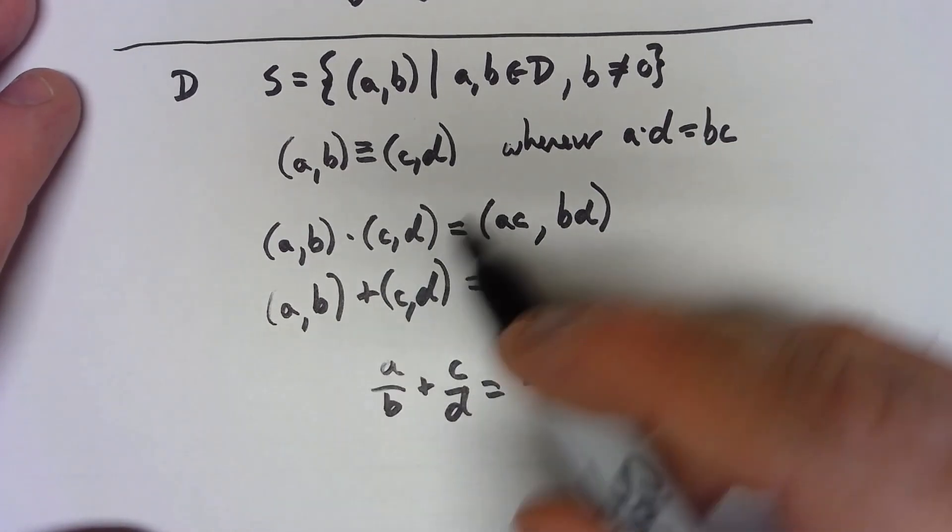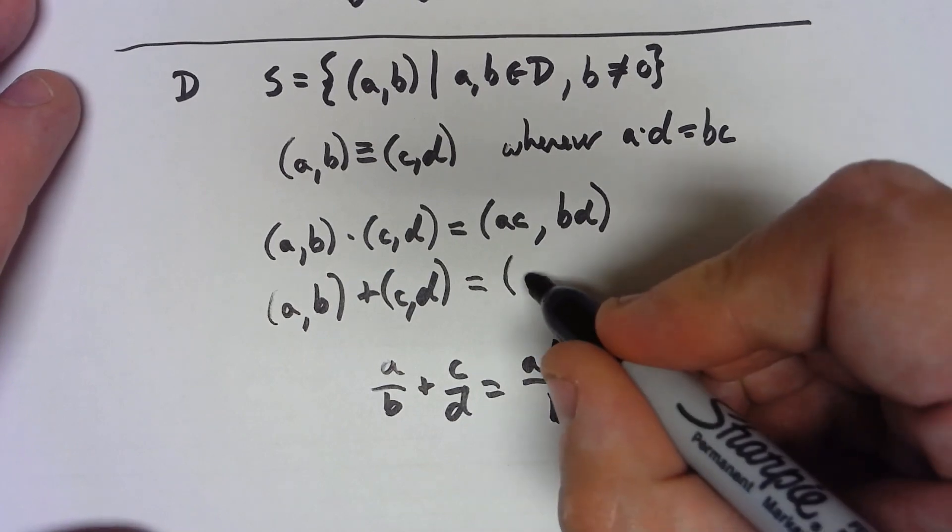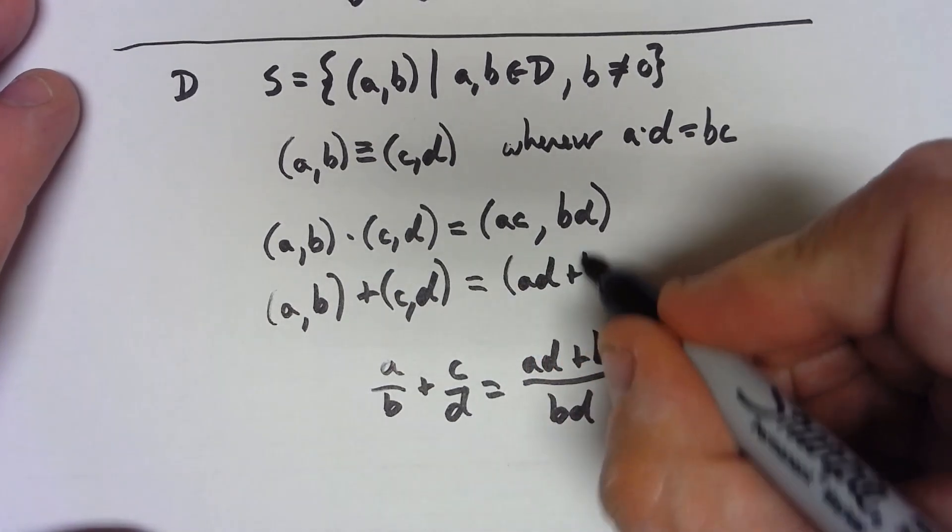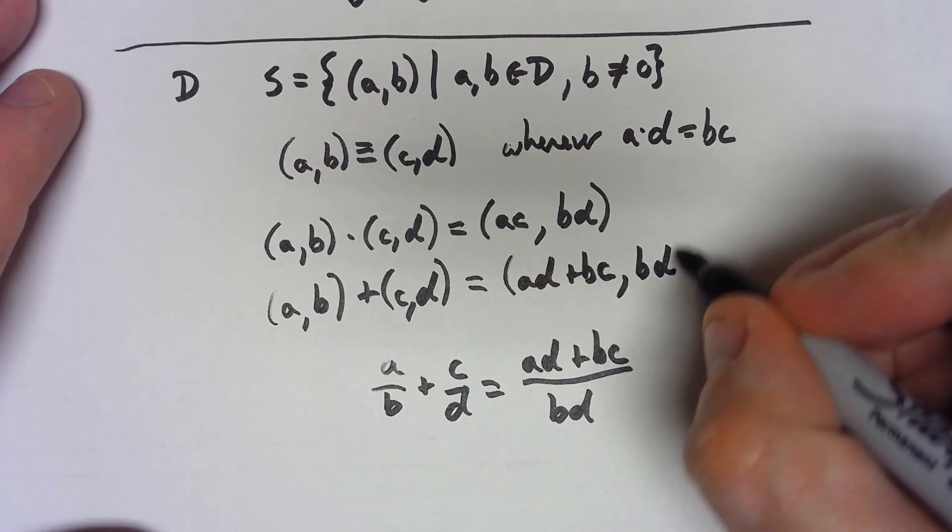And so I'm going to do the same kind of thing here. To define this thing, we're going to say we've got (a times d plus b times c, b times d).